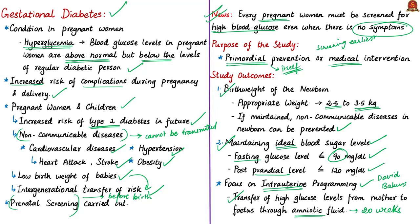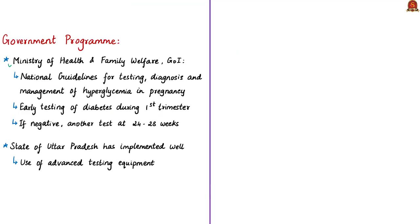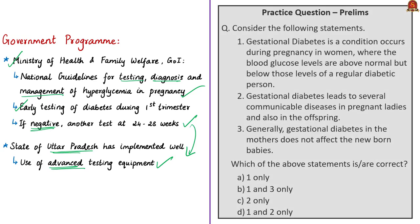The Union Ministry of Health and Family Welfare has developed national guidelines for testing, diagnosis and management of hyperglycemia in pregnancy. The guidelines recommend early testing for diabetes at the first trimester — the first three months of fetus formation. If the test is negative, another test should be done between 24 to 28 weeks of pregnancy to ensure blood sugar levels are under control. The news article notes that the state of Uttar Pradesh has implemented this program extremely well, even using advanced testing equipment for diabetes not seen in other parts of the country.